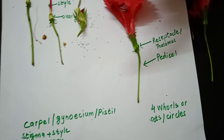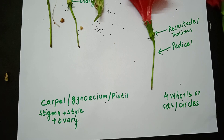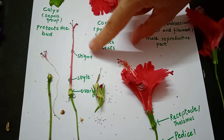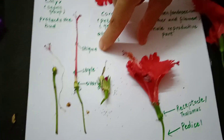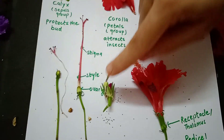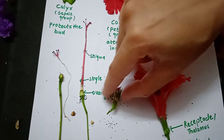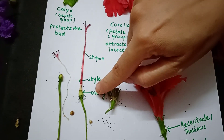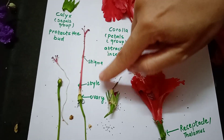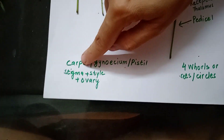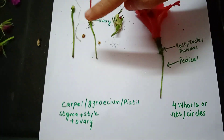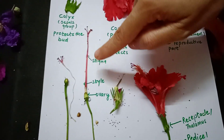To remember the female reproductive part: in 'stigma' you have 'ma', which means mother in Hindi. So remember — 'O stylish ma, let's go in a car' — ovary, style, stigma, and carpel. This fun phrase helps you recall all parts of the female reproductive structure easily.